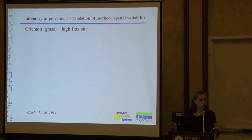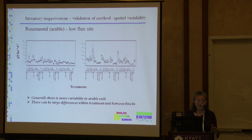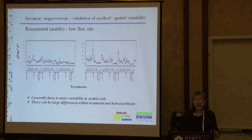I will only show a couple of examples. The Crichton site in Scotland is a grassland site that tends to have high fluxes. We chose a high flux day and a low flux day. There were 11 treatments for each of three blocks, with five chambers on each plot. The variability on the low flux day could be quite large, and there was a tendency for the third block to have lower emissions overall.